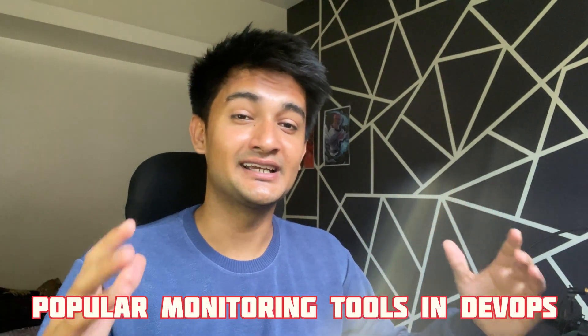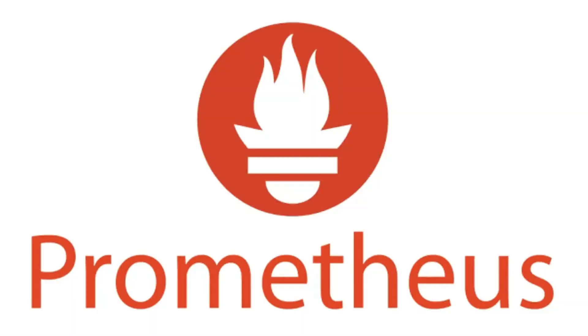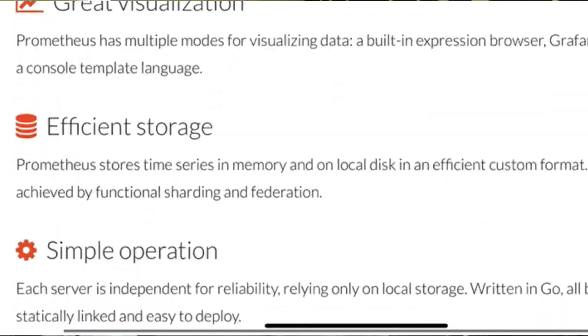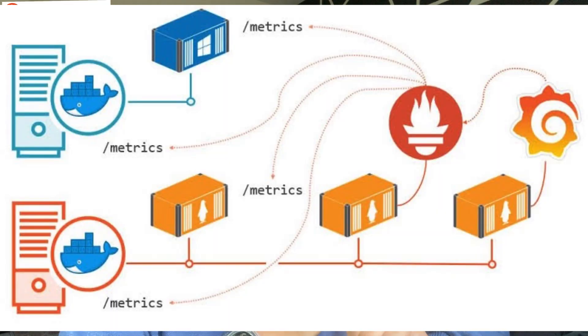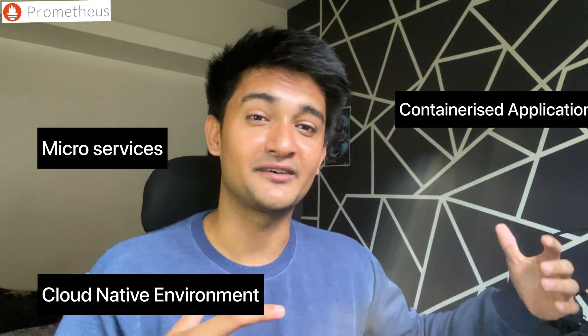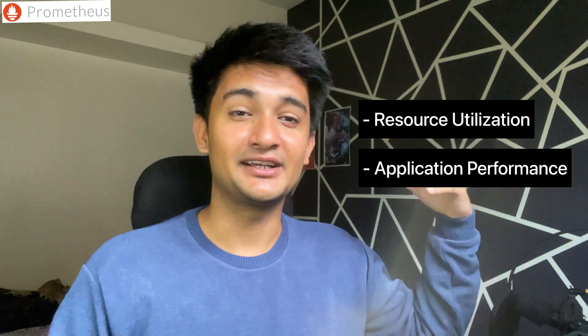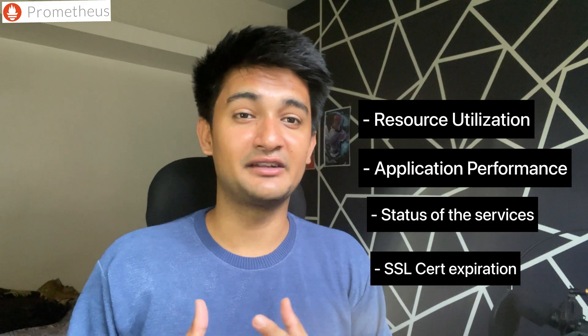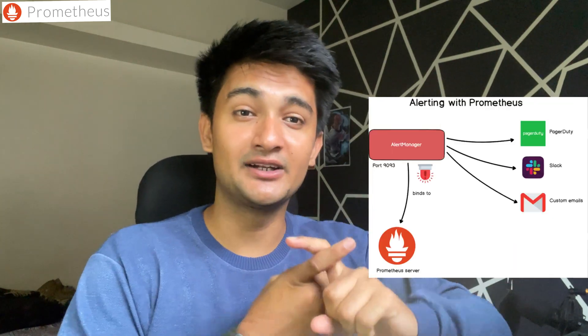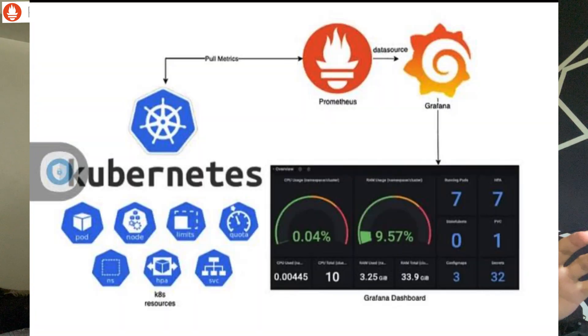Now let's understand how you can actually perform these types of monitoring. What are the popular monitoring tools in DevOps? Starting with Prometheus — a very popular open source monitoring tool used to monitor containerized applications, microservices and cloud native environments. If you have an application on Kubernetes, you can use Prometheus to collect and analyze metrics like resource utilization, check if your service is up, and whether SSL certificates are going to expire.